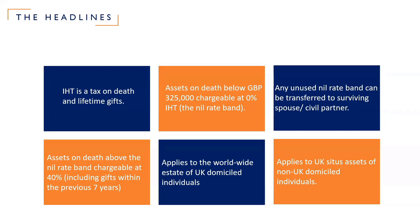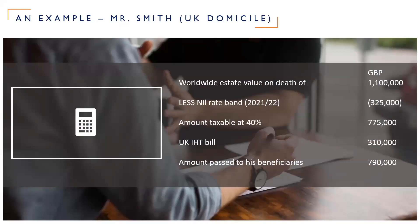To illustrate that in a simple calculation — Mr. Smith is a UK domicile, so his worldwide assets will be included in the inheritance tax calculation on his death. Mr. Smith has got a worldwide estate of £1.1 million. From this we deduct the nil rate band of £325,000, which leaves an amount taxable at 40% of £775,000. This leaves a UK inheritance tax bill of £310,000 — which, as a proportion of the estate, is about 28% — paid to HMRC.